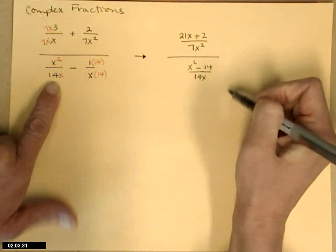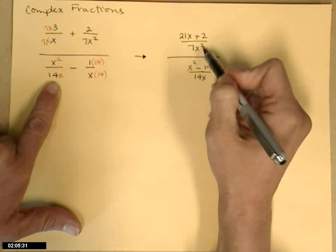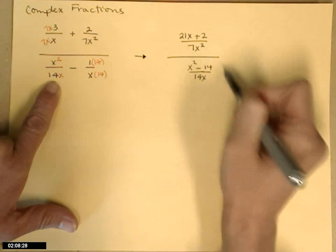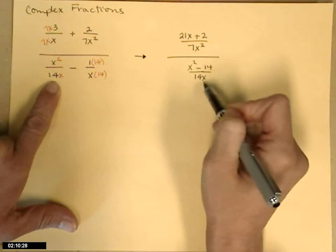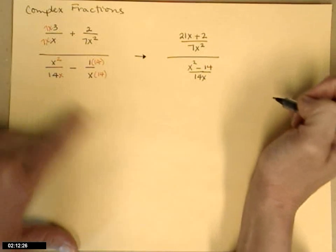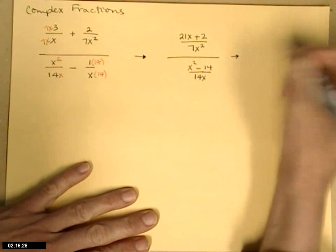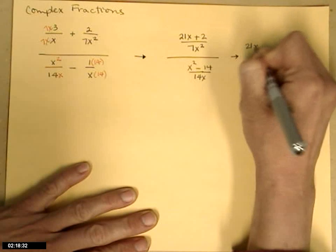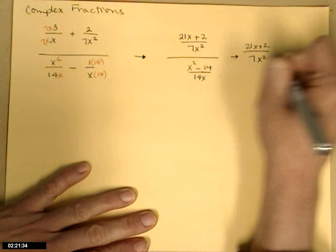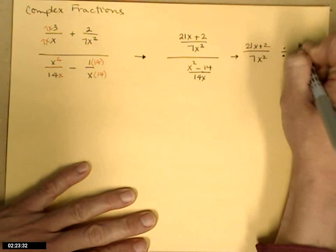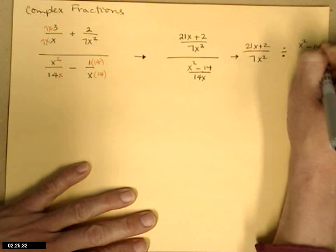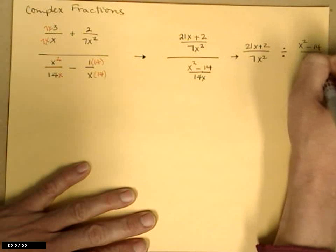And now when I look at this, I have one fraction with one denominator divided by a second fraction, single denominator, a monomial denominator I could say. So if I write this out, this would be 21x plus 2 divided by 7x squared, divided by x squared minus 14 over 14x.